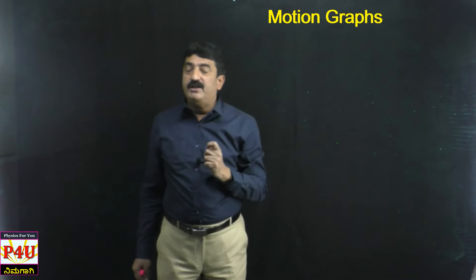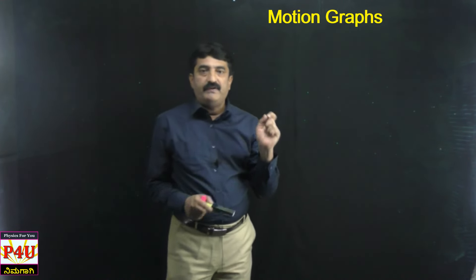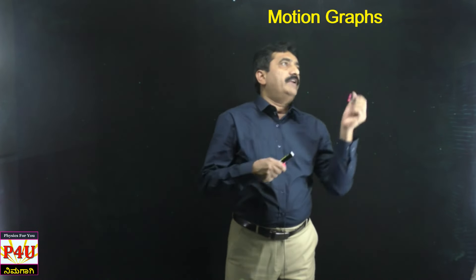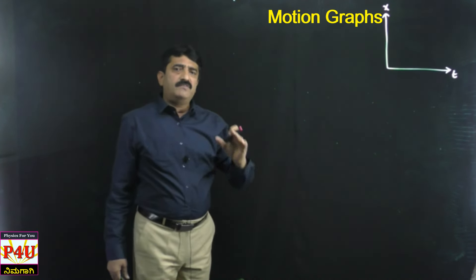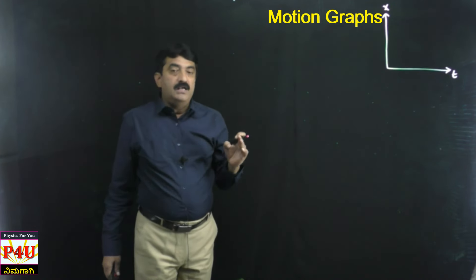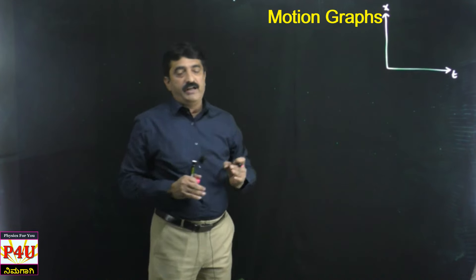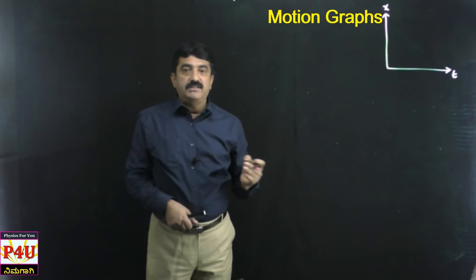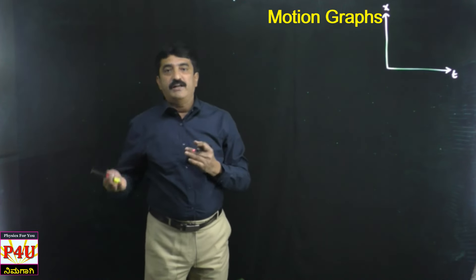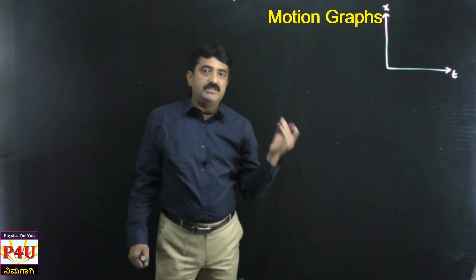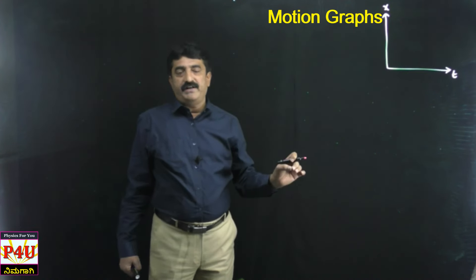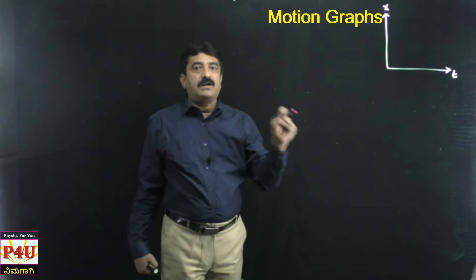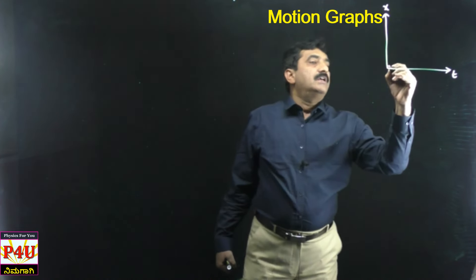Dear students, in PUC you might have studied the position-time graph. The XT graph is nothing but a position-time graph, in which position is taken along the X-axis and time is taken along the Y-axis. This XT graph tells you so many things about the motion of a body — whether it is moving with constant or variable velocity, whether it is at rest or in motion. Here it is called the motion-time graph.